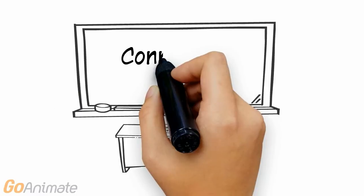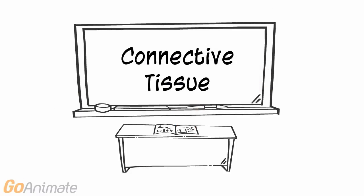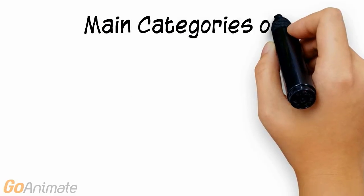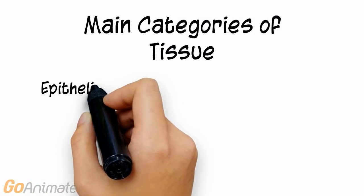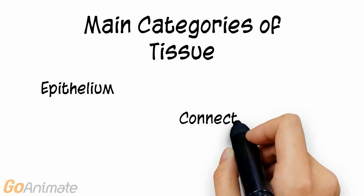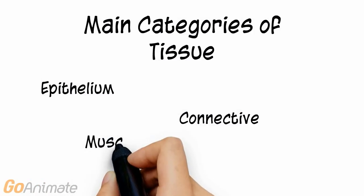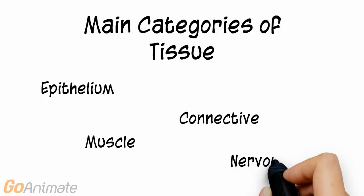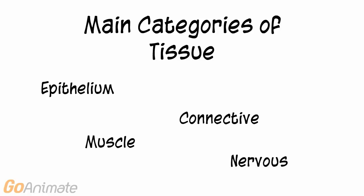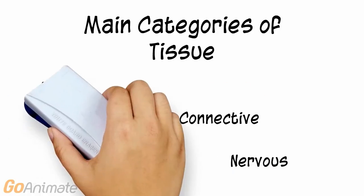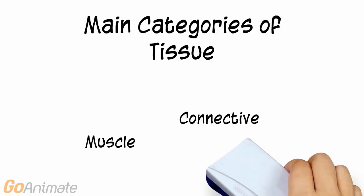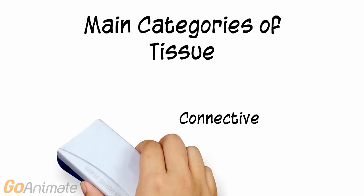Let's learn about connective tissue. The major categories of tissue are epithelium, muscle, nervous, and connective. We will focus on connective tissue.